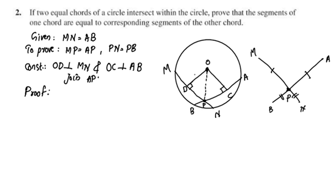The perpendicular from the center on the chord bisects the chord. Now, the perpendicular from the center on chord MN bisects MN. What does this give us?